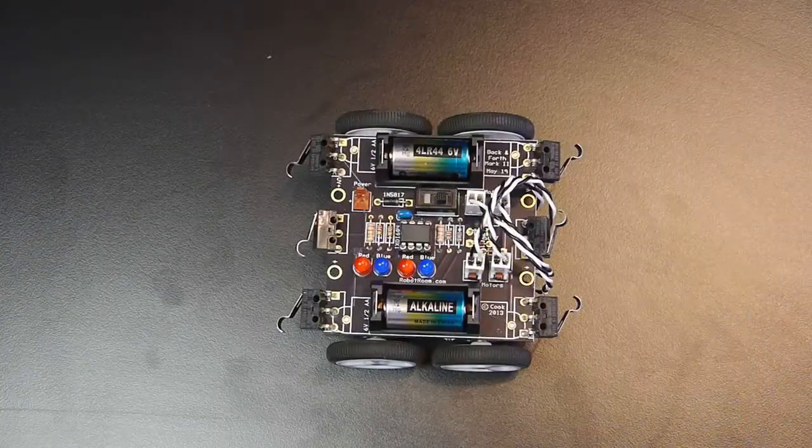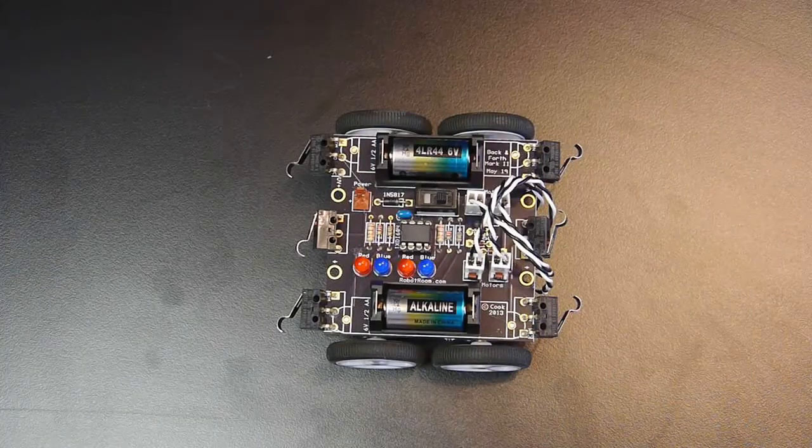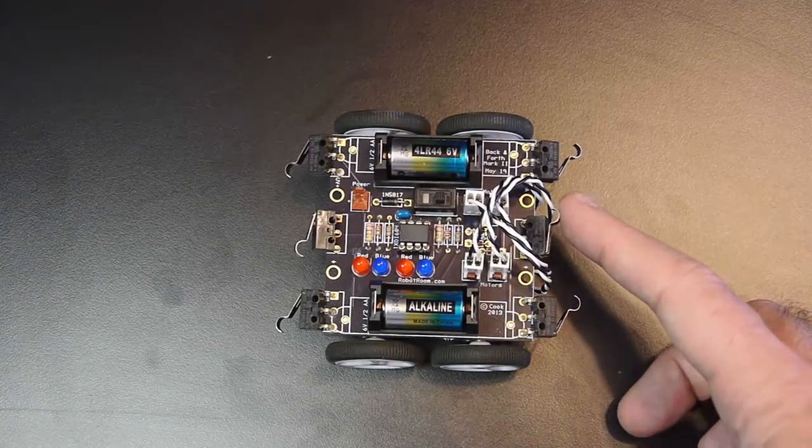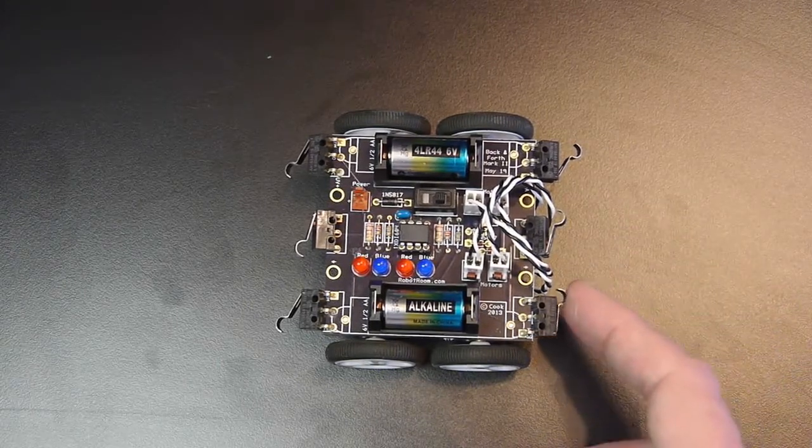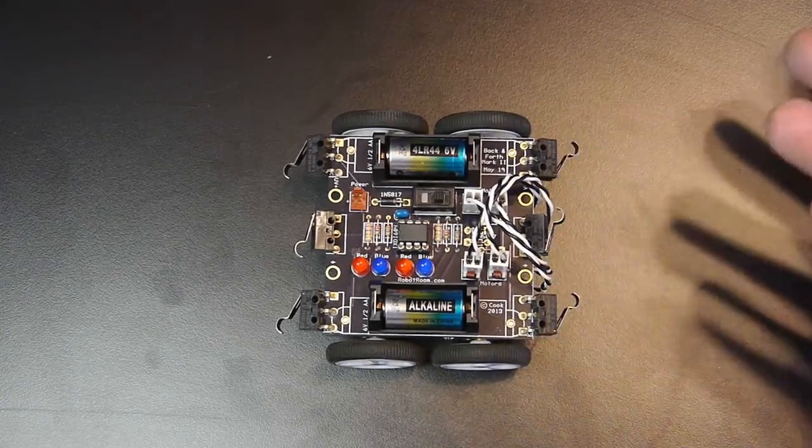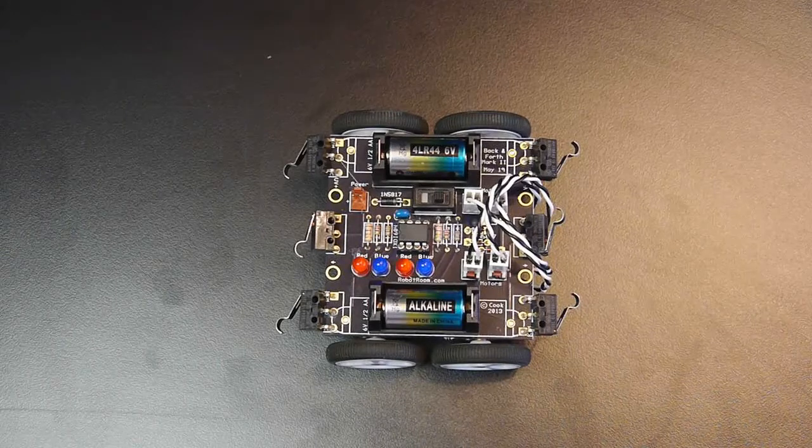Why have three obstacle detection switches on each side? If I simply had one in the center, it wouldn't be able to detect collisions on the sides. By having three, it allows it to detect obstacles better.